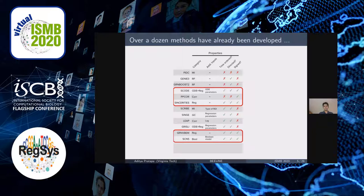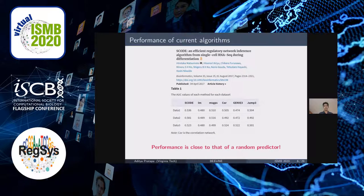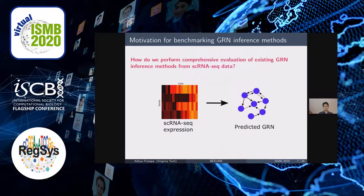But how good are these methods for GRN inference from single-cell data? Here is a typical performance evaluation reported in one of the papers. The table shows the area under the receiver operator characteristic curve, or AUROC, and most values are close to 0.5, which is the AUC of a random predictor. Most evaluations vary from paper to paper, each using a different dataset and ground truth network and claiming their method is the best. Before developing our own GRN inference method, we wanted to evaluate how good these methods are in a uniform framework.